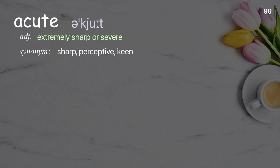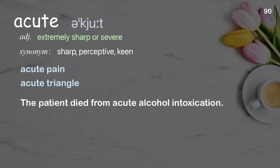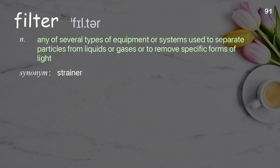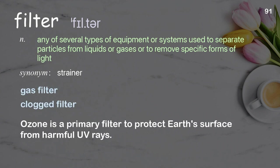Acute: extremely sharp or severe. Examples: acute pain, acute triangle. The patient died from acute alcohol intoxication. Filter: any of several types of equipment or systems used to separate particles from liquids or gases, or to remove specific forms of light. Examples: gas filter, clogged filter. Ozone is a primary filter to protect earth's surface from harmful UV rays.